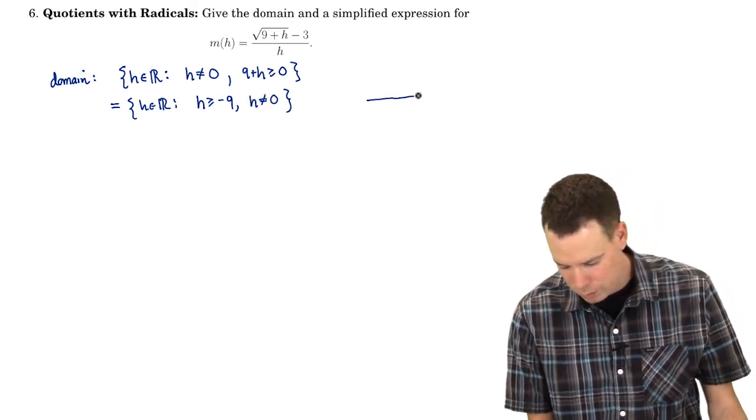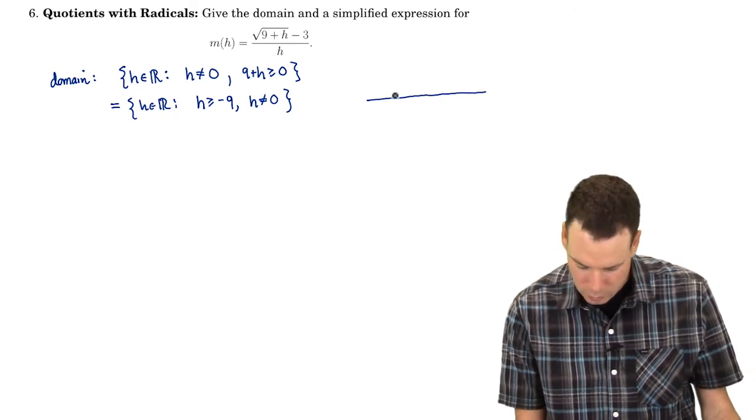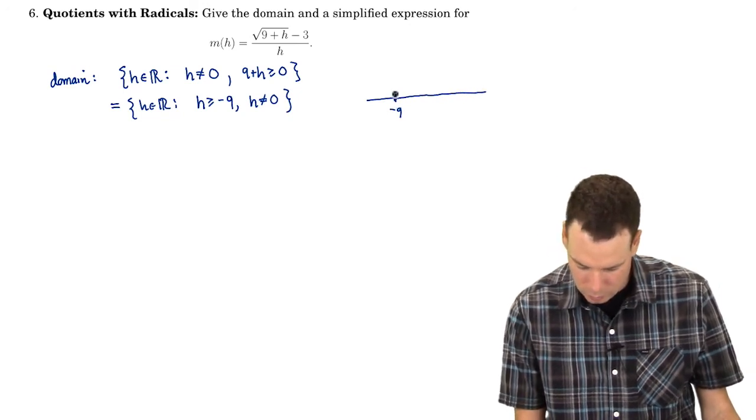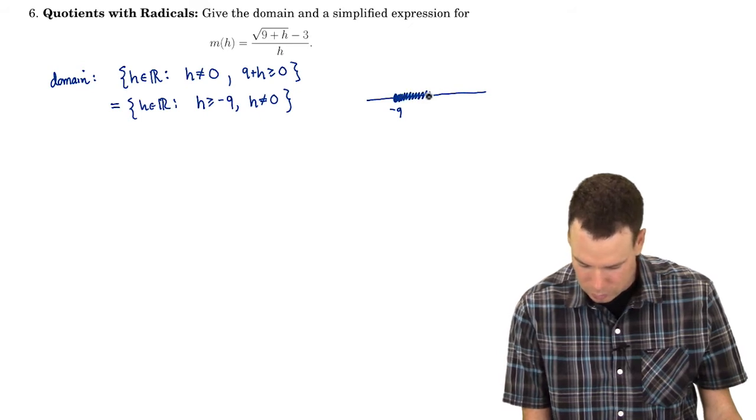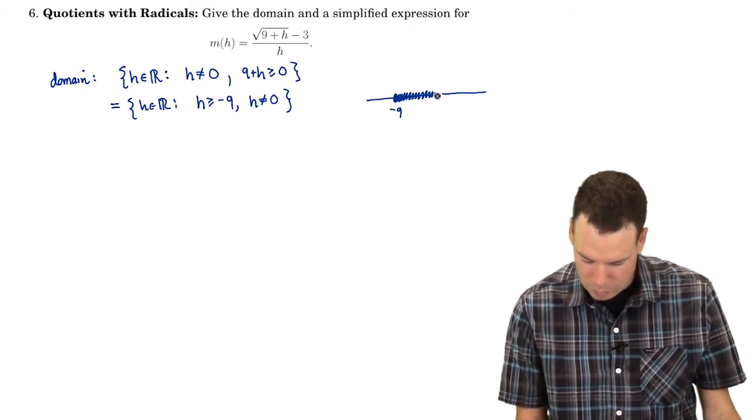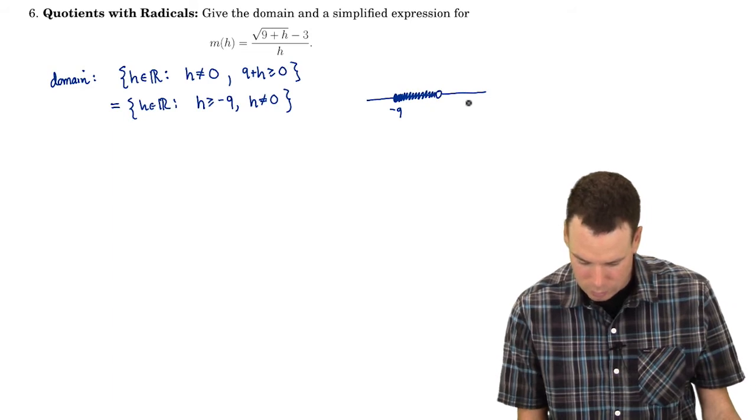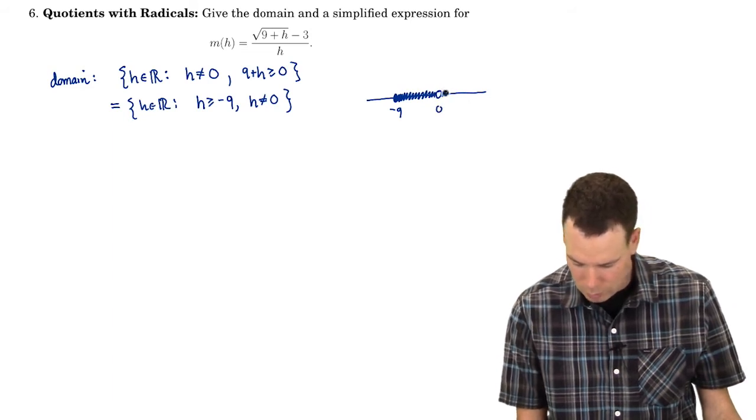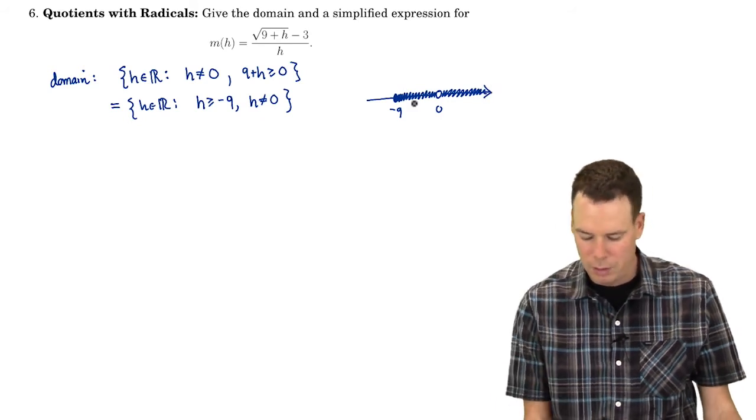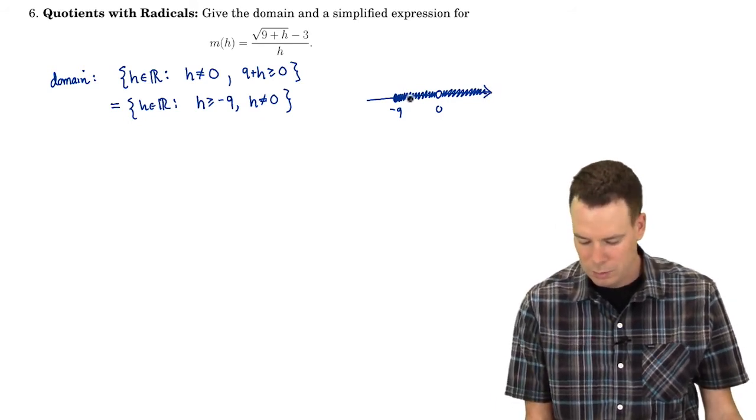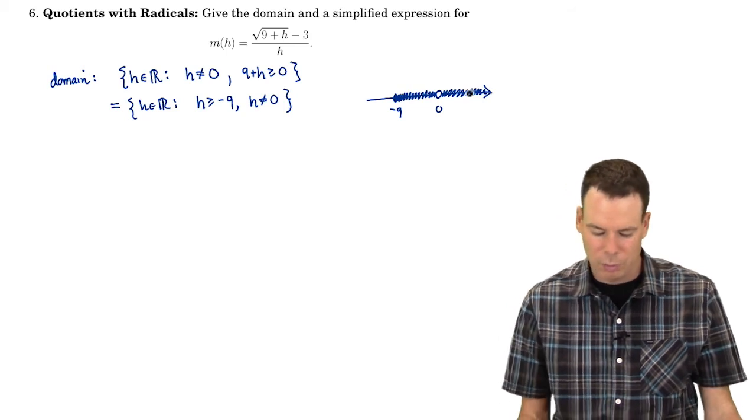So in terms of what it looks like on the number line, we've got negative 9. We're allowing that. We're allowing all of these values here in the domain except I've got to exclude zero, but anything beyond zero works as well. So there is what our domain looks like as a shaded collection of points on the number line.